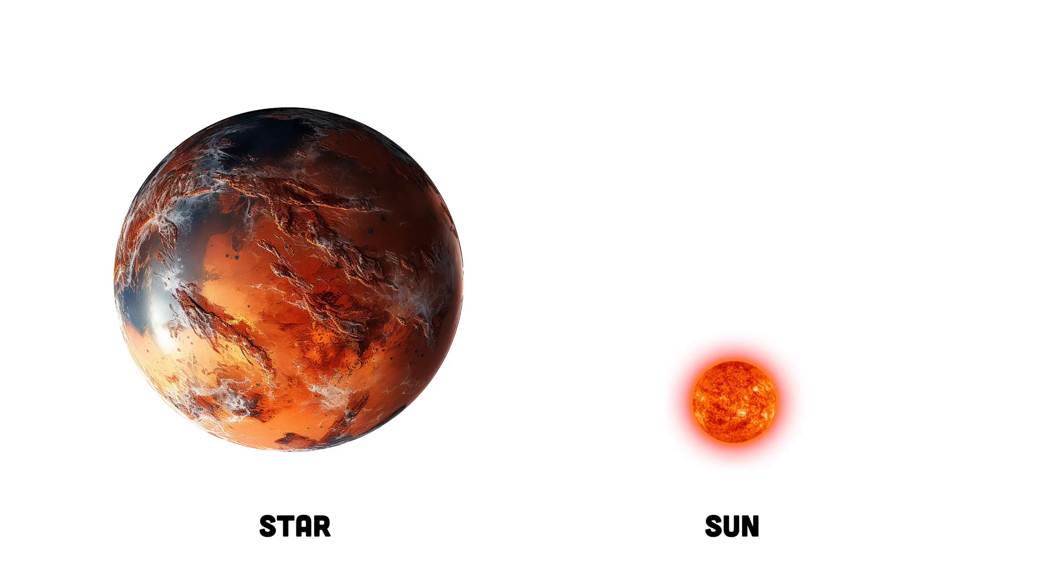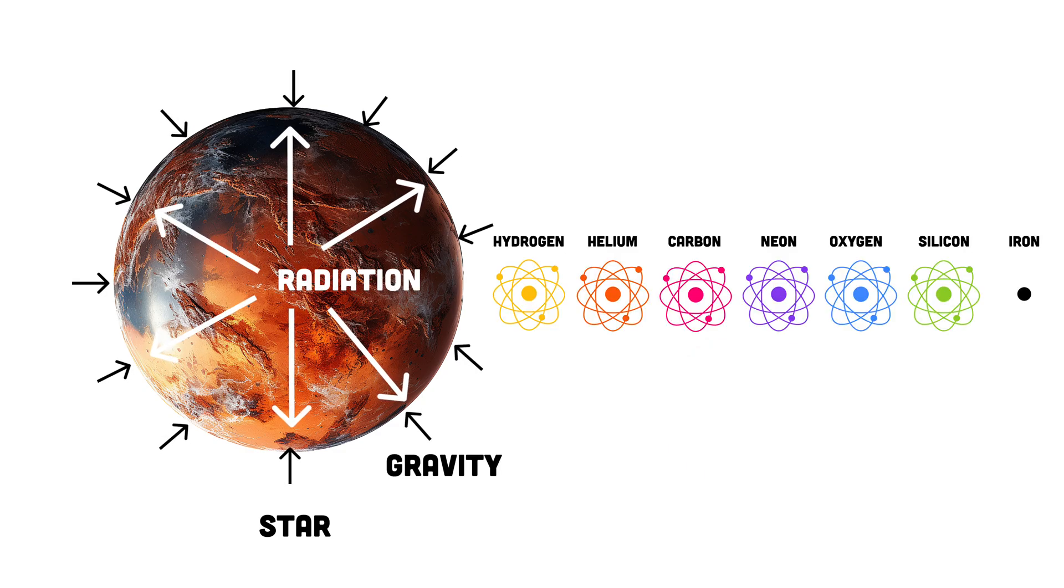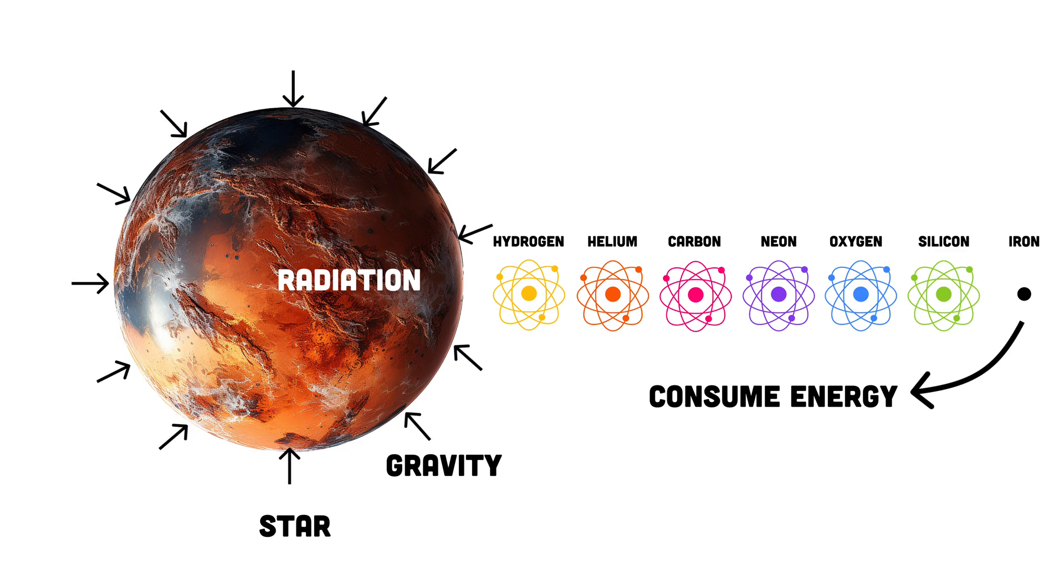Black holes form when massive stars, at least eight times the mass of our Sun, collapse under their own gravity. These stars burn through their fuel to pushes against gravity, starting with hydrogen and then moving on to heavier elements like helium, carbon, and eventually iron. But fusing iron actually consumes energy instead of producing it and the balance between radiation and gravity is suddenly broken. This causes the core to collapse rapidly, leading to a supernova explosion.